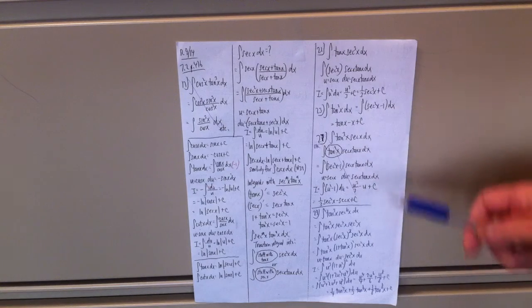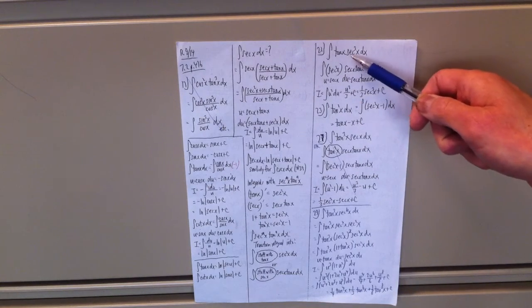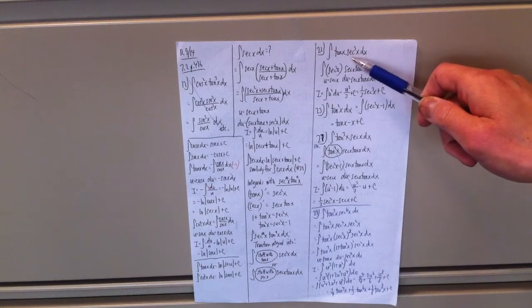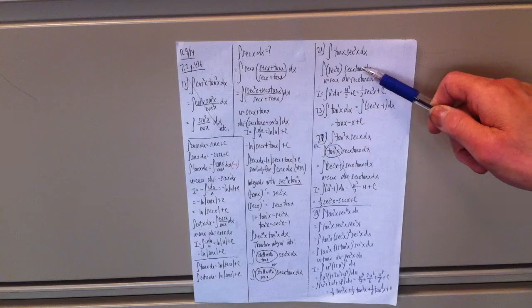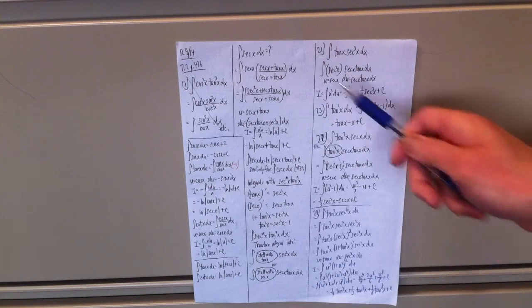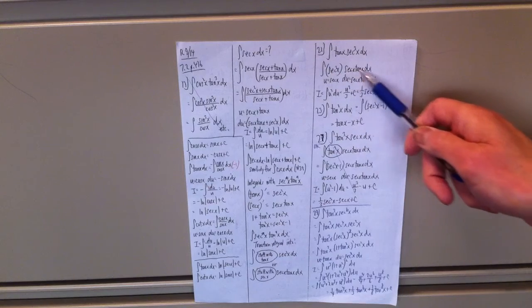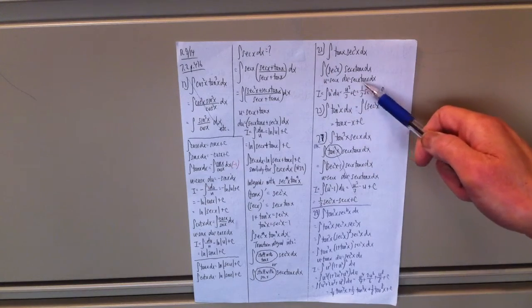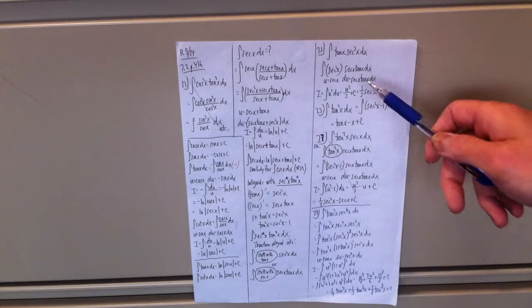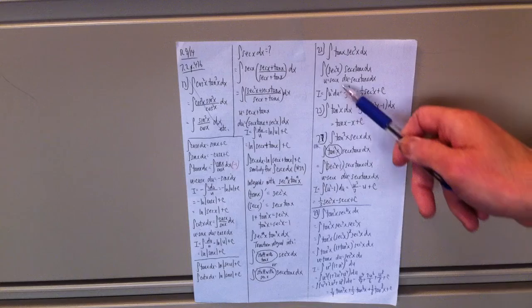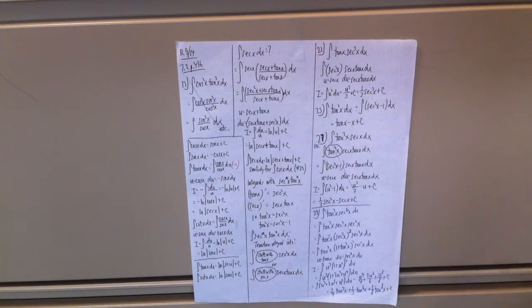Problem 21: integral of tan(x) sec³(x) dx. We can extract a sec(x)tan(x), rewriting it as sec²(x) · sec(x)tan(x) dx. Since the derivative of secant is secant tangent, let u = sec(x), du = sec(x)tan(x) dx. This transforms the integral into u² du, which gives u³/3 + C, or (1/3)sec³(x) + C.